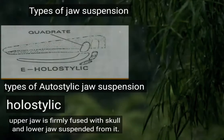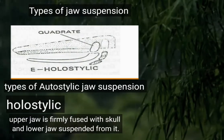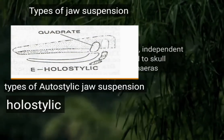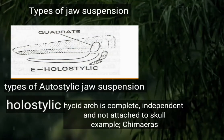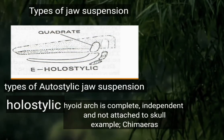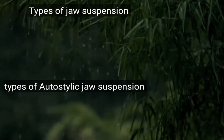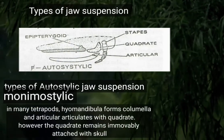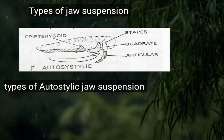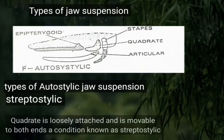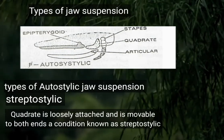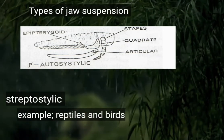In holostylic jaw suspension, the upper jaw is firmly fused with the skull and the lower jaw is suspended from it. The hyoid arc is complete and independent, and this type is found in chimaeras. In monimostylic jaw suspension, seen in many tetrapods, the hyomandibular forms the columella. In streptostylic jaw suspension, the quadrate is loosely attached and movable at both ends. This type is usually found in reptiles and birds.